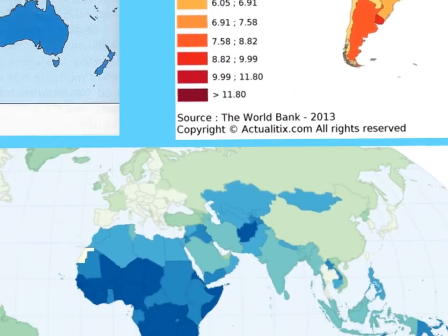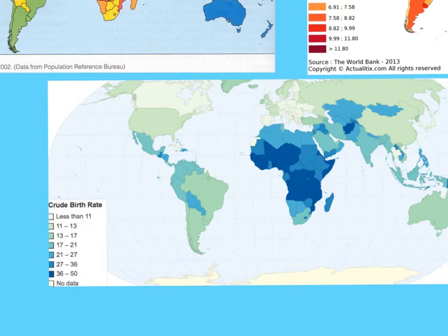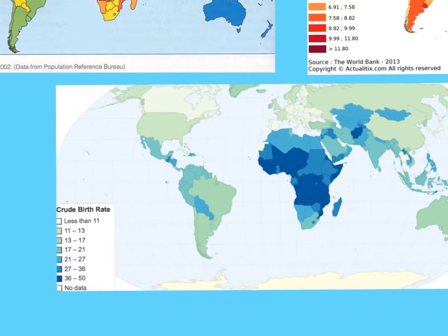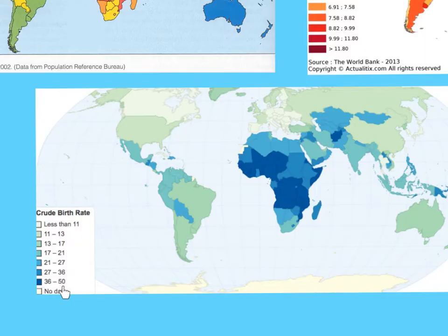We'll also be looking at birth rates. Here's a map of the world with birth rates, and once again the darker the shade the more births there are per 1,000 people — that's what 'crude' means. You can see not many are born here, while the UK and America have more, and the darkest areas show 36 to 50 births per 1,000 people.